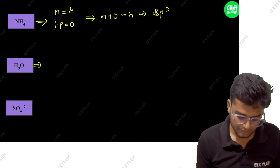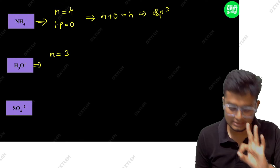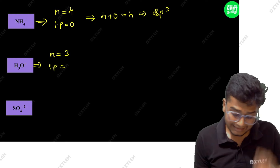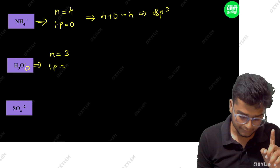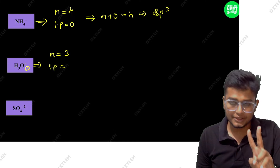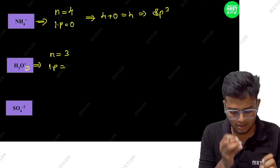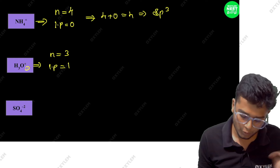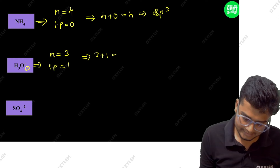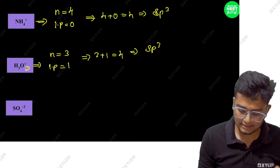Next, H3O+. Oxygen has 3 hydrogens, so number of atoms is 3. Now, usually oxygen has two lone pairs, but since it is O+ (H3O+), one lone pair is used for the bond — so lone pairs remaining is 1. So 3 plus 1 equals 4. That gives SP3 hybridization. Simple.